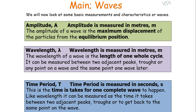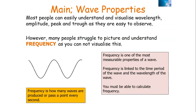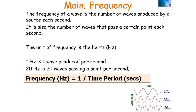Frequency, measured in hertz, is the number of complete oscillations in a wave in one second, and frequency equals one over the time period. So 20 hertz means 20 waves passing a point every second; one hertz is one wave being produced every second. Amplitude is the maximum displacement from equilibrium. Wavelength is the length of one whole cycle. Time period is the time it takes for one complete wave. And frequency is how many waves pass through a point each second.